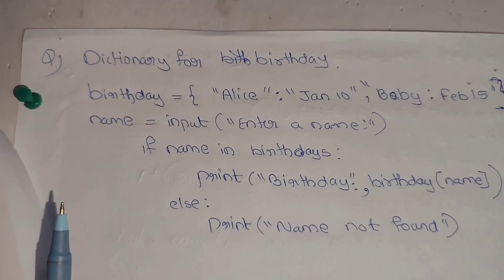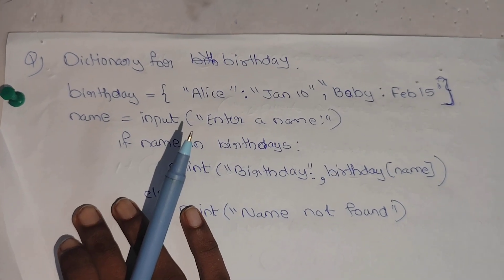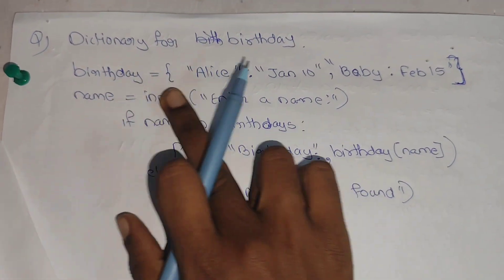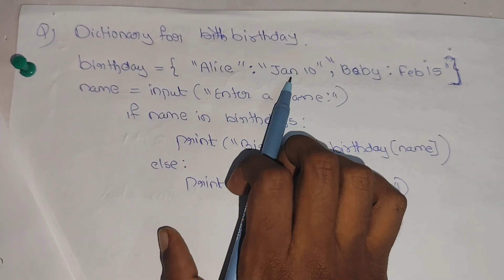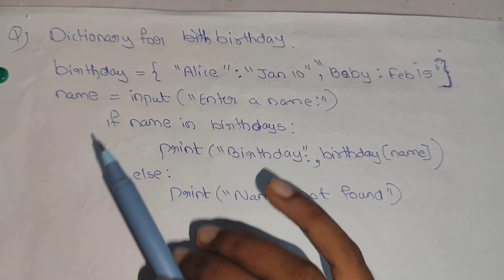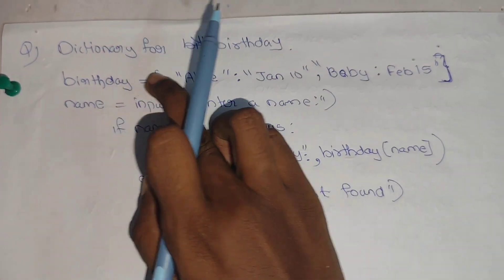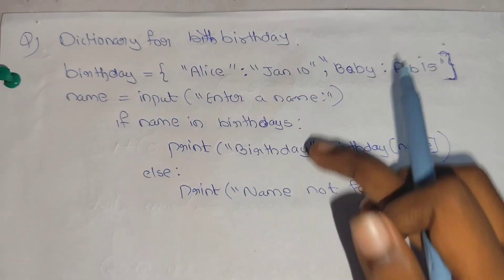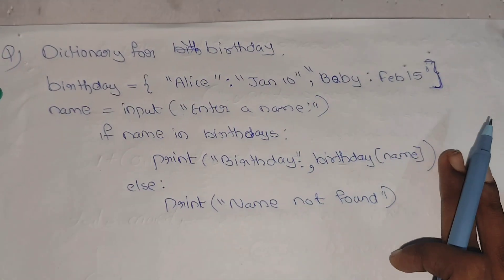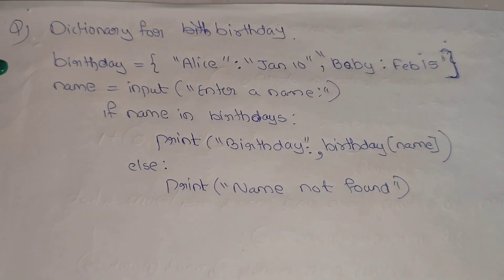Next question: create a dictionary of names and birthdays. Write a Python program that asks the user to enter a name and the program displays the birthday of that person. First, set up a dictionary with names as keys and birth dates as values. Ask the user to enter a name, then look up and print the corresponding birthday from the dictionary. This is a simple user program for Module 2.